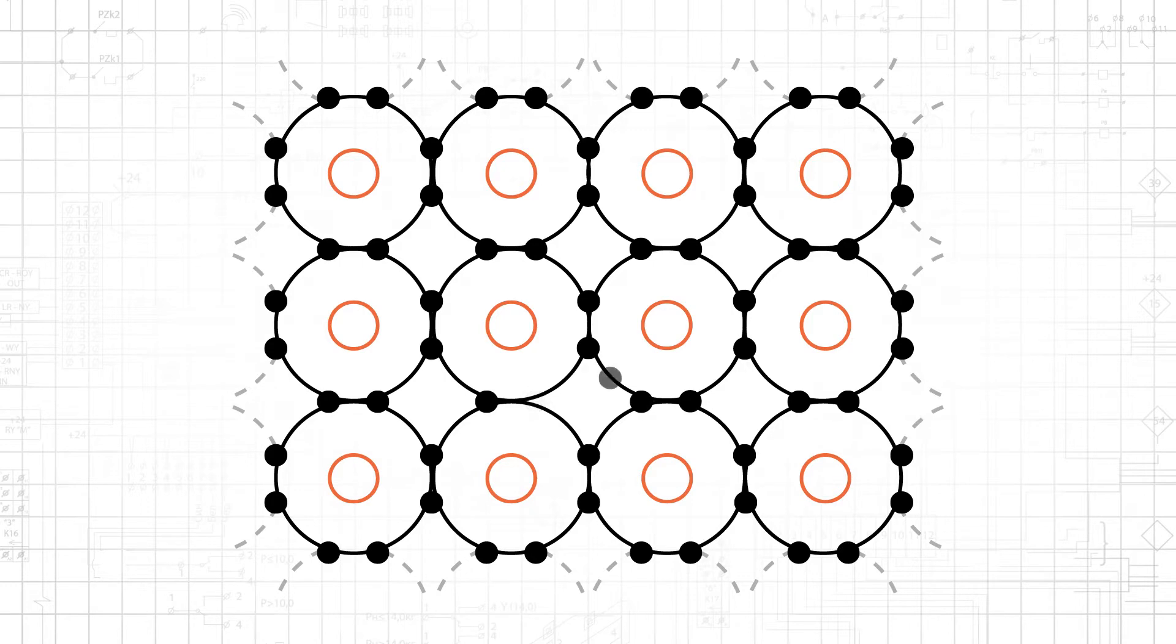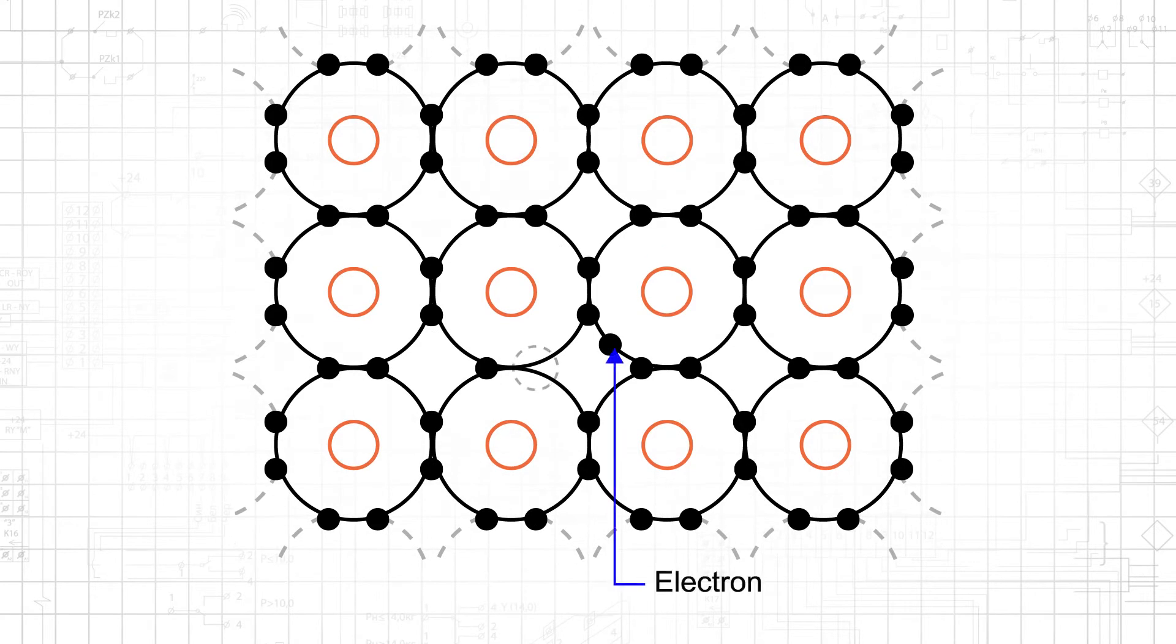Thermal energy causes valence electrons to break out of a semiconductor's lattice structure and thereby become free electrons. These mobile electrons are negative charges that can move under the influence of an applied electric field, and the holes left behind by these free electrons function as mobile positive charges.